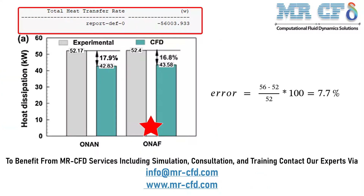As you can see in this slide, we have extracted Figure 10 of the paper. We have also recorded the value of total heat transfer in our CFD simulation. As can be seen in the graph, the experimental results for forced air convection over the fins is equal to 52.4 kW, whereas the paper's CFD simulation reported 43.58 kW. The most interesting point is that our CFD simulation is more accurate than the paper's, with an error of only 7.7%.